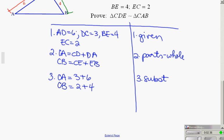While it's tempting, we can't add those in the same step that we're substituting. Remember, one step per line. So CA is equal to 9 and CB is equal to 6. And I can do that by addition.